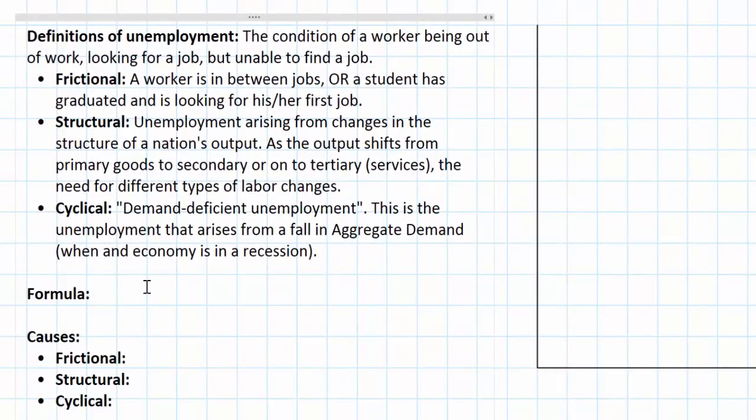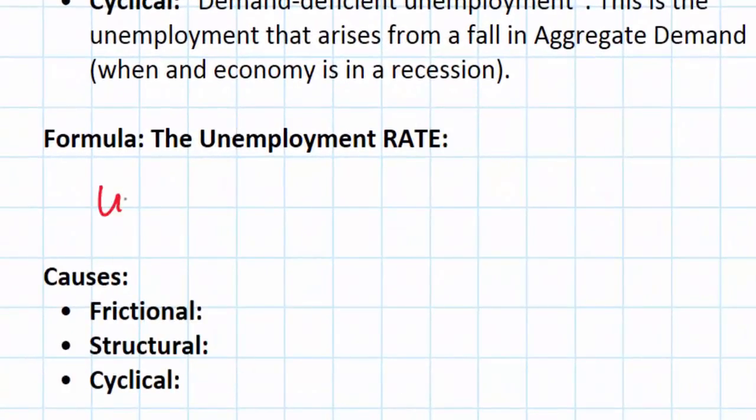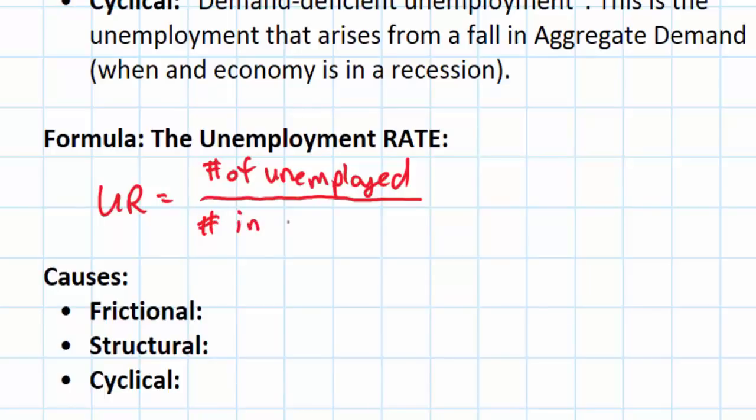Usually when discussing unemployment, we refer to the unemployment rate. The unemployment rate refers to the proportion of the total labor force that is unemployed at any given time. The unemployment rate is measured by measuring the number of unemployed people in an economy using the definition above—workers who are out of work, looking for a job, and unable to find a job—divided by the number of people in what we call the total labor force, or the TLF. The total labor force includes everybody in the nation above the age of 16 who is either employed or unemployed. In other words, people who are looking for a job unable to find one or already have a job.